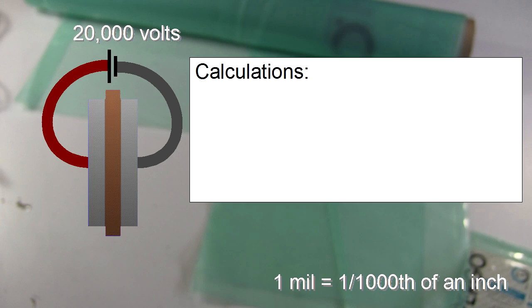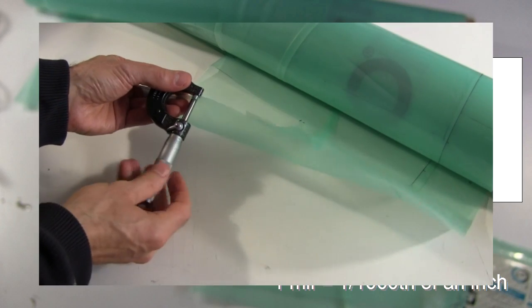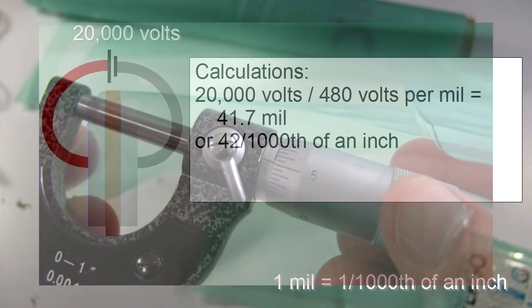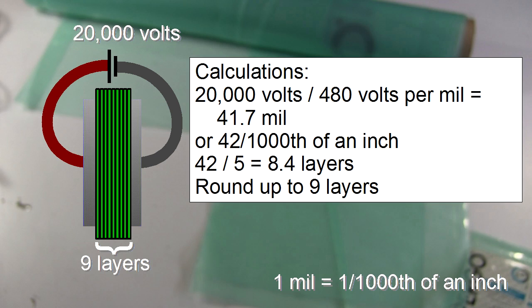Let's say we want to be able to handle 20 kilovolts, or 20,000 volts. 20,000 volts divided by 480 volts per mil gives us a thickness of 41.7 mil, and that's 42 one thousandths of an inch. If I take my calipers, I find that a single thickness of polyethylene is five one thousandths of an inch. So 42 divided by 5 tells me that 8.4 layers of polyethylene will be thick enough to withstand 20,000 volts. Of course I'll round that up to nine layers, or even more for additional safety.